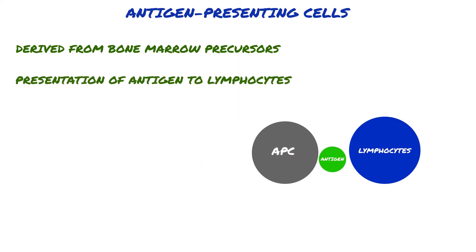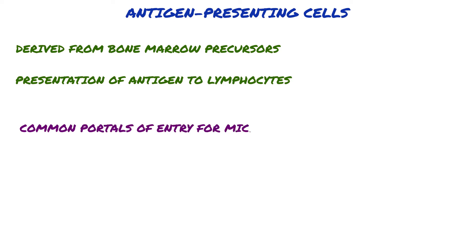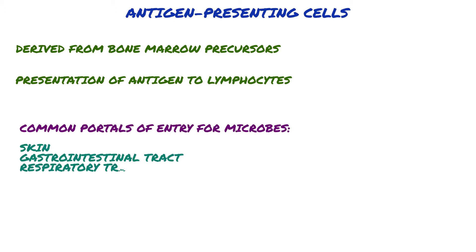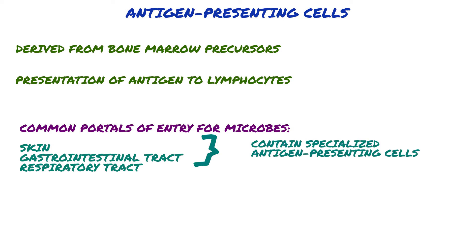The common portals of entry for microbes — the skin, gastrointestinal tract, and respiratory tract — contain specialized antigen-presenting cells located in the epithelium that capture antigens, transport them to peripheral lymphoid tissues, and display them to lymphocytes.